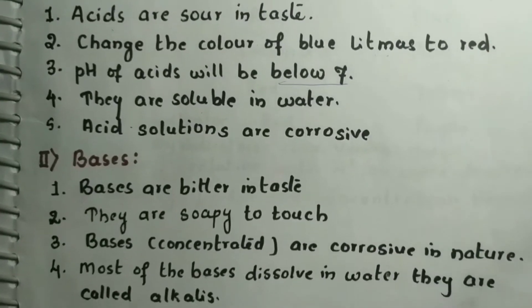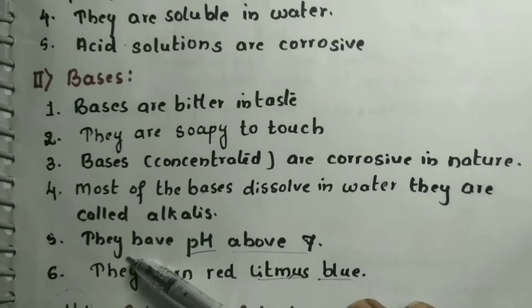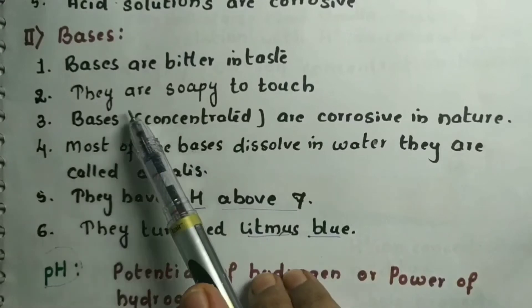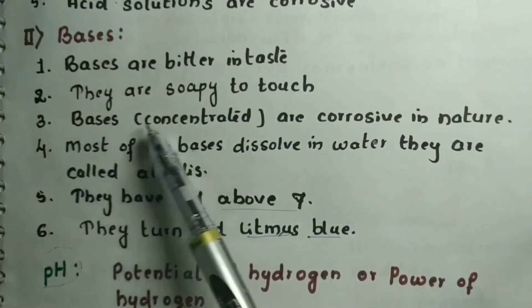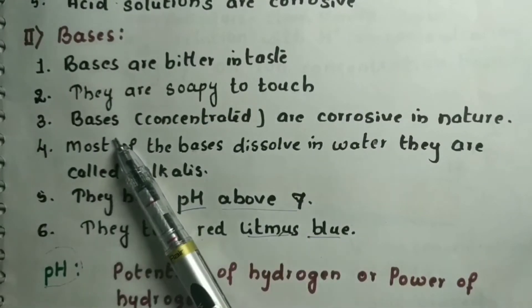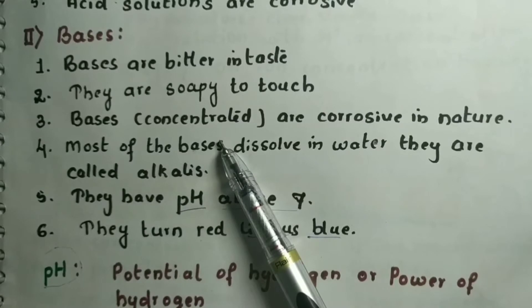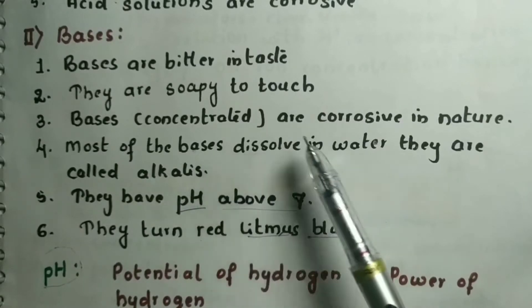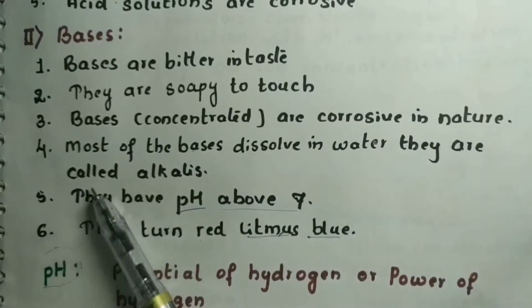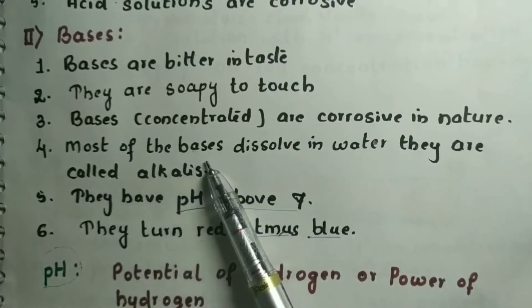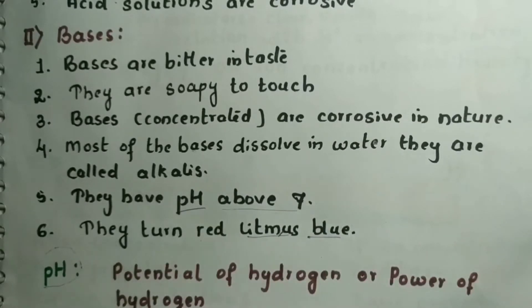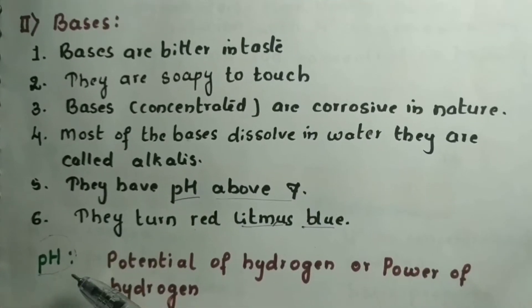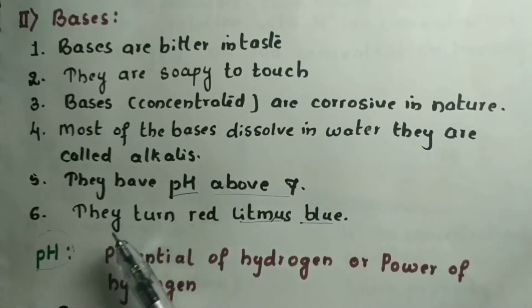Now let us see the physical properties of bases. Bases are bitter in taste and soapy to touch. In concentrated solutions, bases are corrosive in nature. Most bases that dissolve in water are called alkalies. They have a pH above 7 and they turn red litmus to blue.